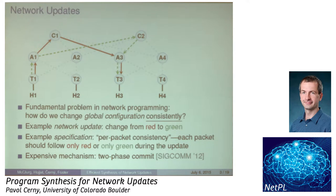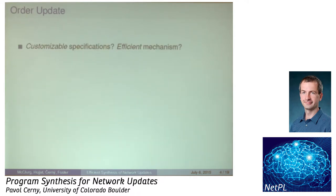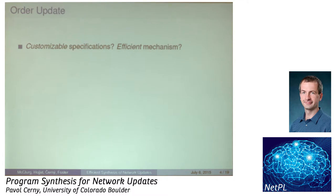They proposed a mechanism to implement this called Two-Phase Commit. That worked great, but the problem was that it was expensive in terms of memory required on the switches — it required doubling the memory on critical switches on the path, which is not always possible. So what we are looking at is two things: a mechanism that is more efficient in memory consumption, and making specifications for network updates more customizable. Sometimes per-packet consistency is not implementable in an efficient way, so we want to relax it in various ways.